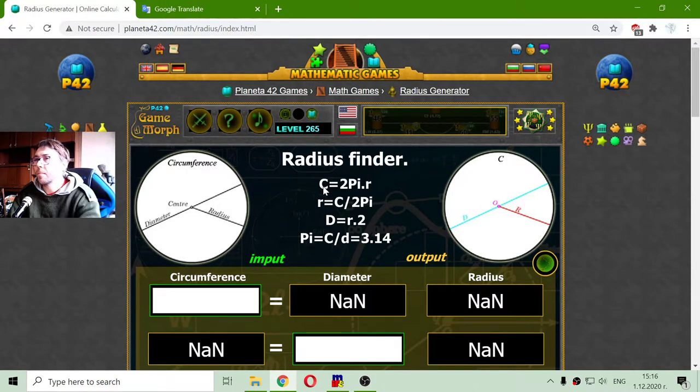Circumference is marked by C and it is equal to Pi multiplied by R, which is radius. C is the circumference, R is the radius.